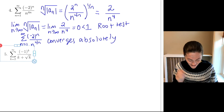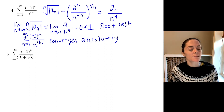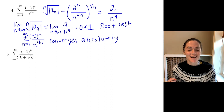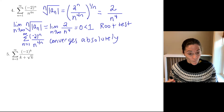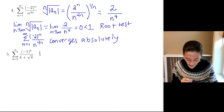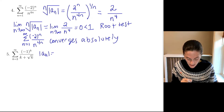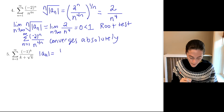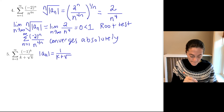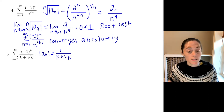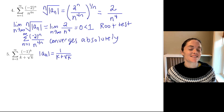Number five is the last one on this section 5.4 problems. This one came off the final from spring 2022. We begin by looking at the absolute value of a_k. Definitely this is an alternating series, and we get 1 divided by k plus the square root of k. Notice these terms are going to zero, so the terms of the alternating series will go to zero.